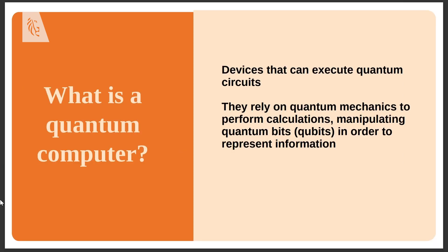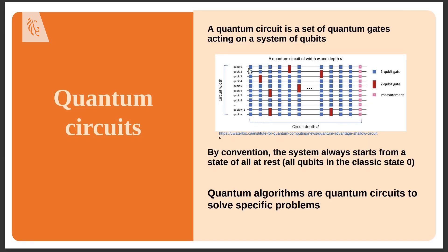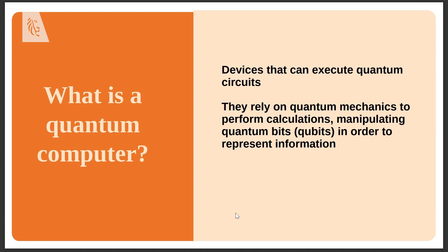A quantum computer is a device that can execute quantum circuits. It relies on quantum mechanics to perform calculations by manipulating quantum bits to represent information. It's made of qubits — two-state quantum mechanical systems — that can execute quantum circuits. An important requirement is that these qubits must be long-lived enough for the required operations to be applied.